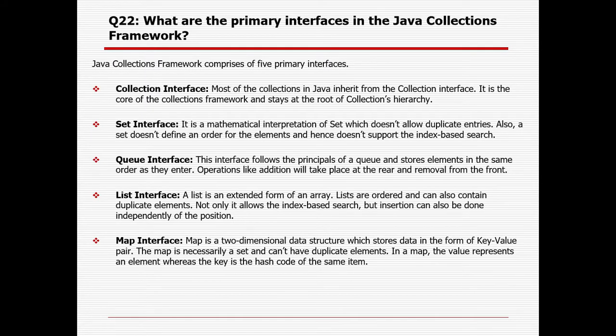What are the five interfaces available in the Java collection framework? The first is the Collection interface — most collections in Java inherit from it and it stays at the root of the collection hierarchy. The Set interface is a mathematical interpretation of set which does not allow duplicate entries; set does not define order for elements and does not support index-based search. The Queue interface follows the principle of a queue and stores elements in FIFO order — additions at the rear and removal from the front.